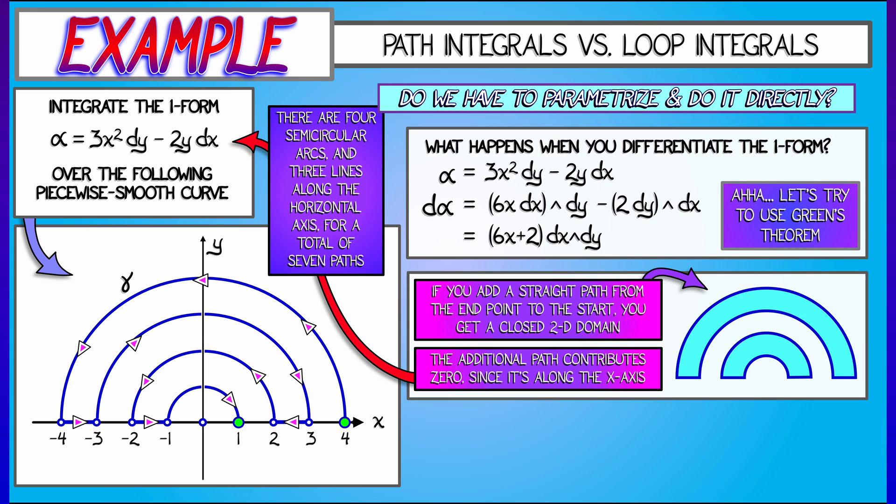Now, here's the thing. That path that I added contributes nothing to the path integral because it's moving along the x-axis. And along the x-axis, dy is 0, so that component of alpha doesn't contribute. And the dx component has a negative 2y out in front, but along the x-axis, y vanishes. So adding this path didn't change the integral at all, but it allows me to use Green's Theorem.